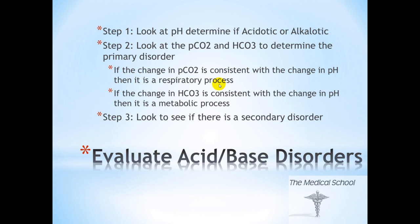Now let's go on to determining how to identify an acid-base disorder. First, look at the pH to determine if it's an acidosis or alkalosis. Second, look at the pCO2 and bicarb to determine the primary disorder. If the change in pCO2 is consistent with the change in pH, then it is a respiratory process. If the change in bicarb is consistent with the change in pH, then it is a metabolic process. Once you've identified whether it's acidotic or alkalotic, respiratory or metabolic, look to see if there's a secondary disorder.